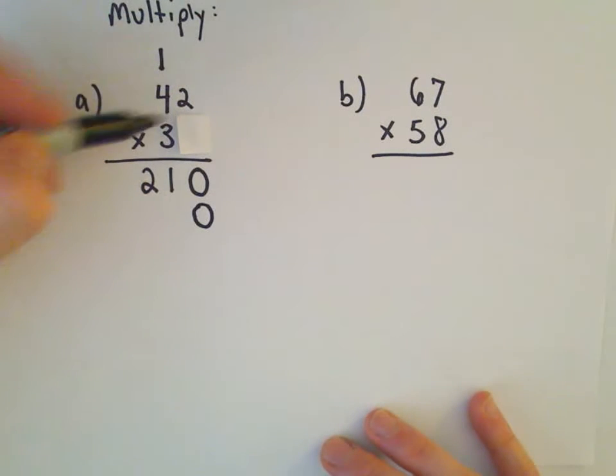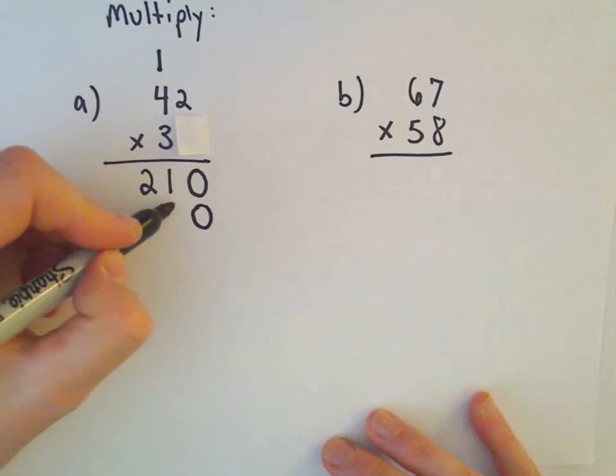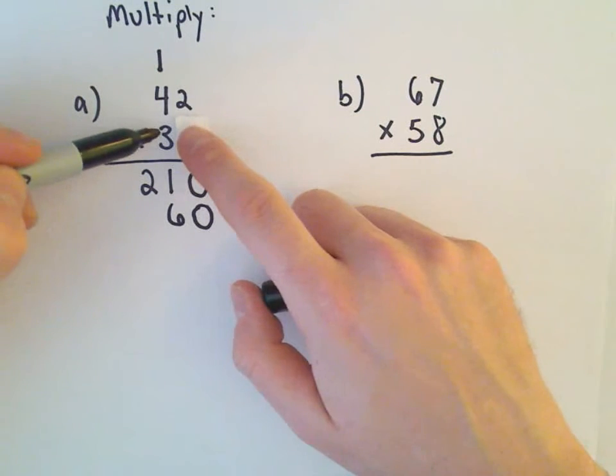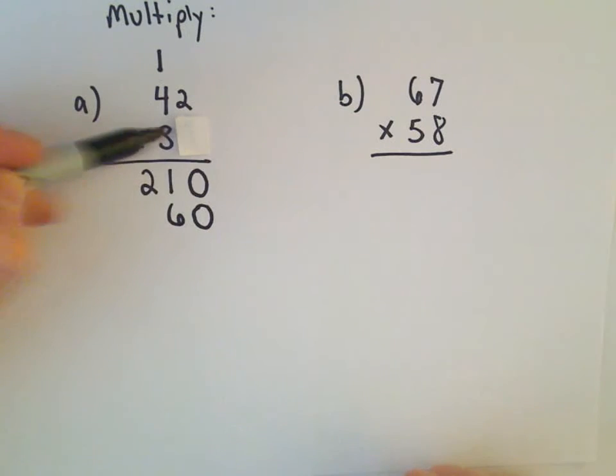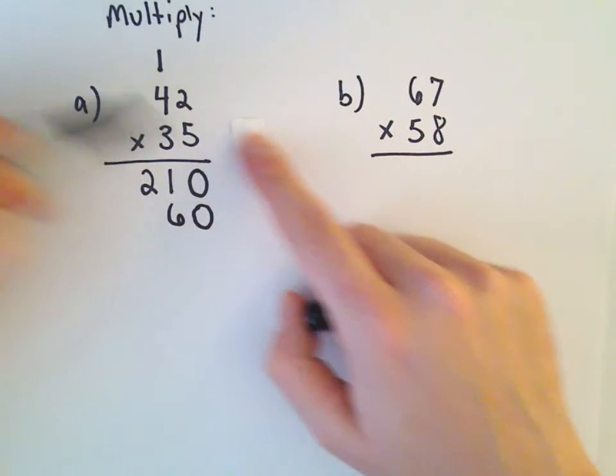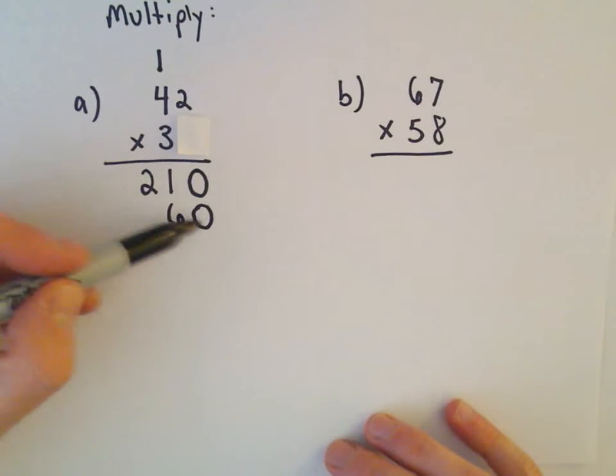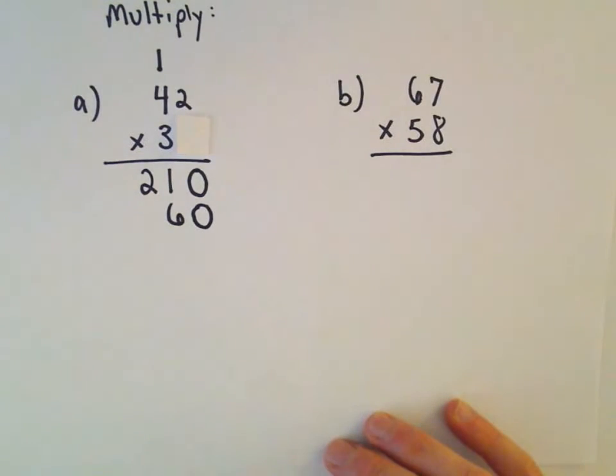Okay, so we'll do 3 times 2, which is going to be 6. And that makes sense, really, because if you think about it, this is kind of like having a 30. 30 times 2 would give us 60, so it does, it shouldn't be a 6 at all.